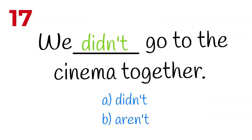We didn't go to the cinema together. Estamos haciendo una oración negativa en pasado simple. Tenemos que utilizar nuestro auxiliar 'didn't' y no el verbo 'to be'.